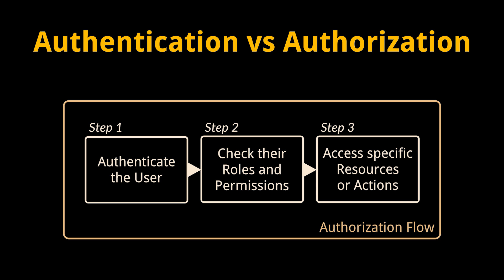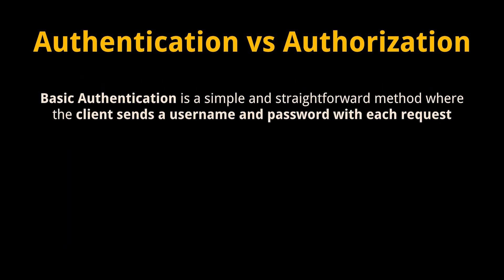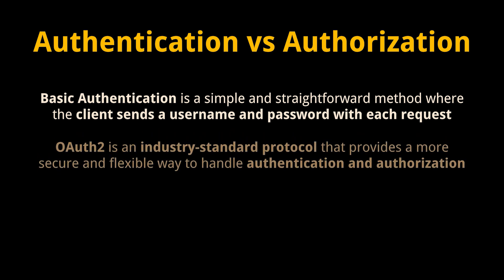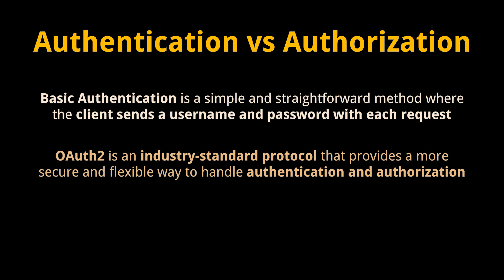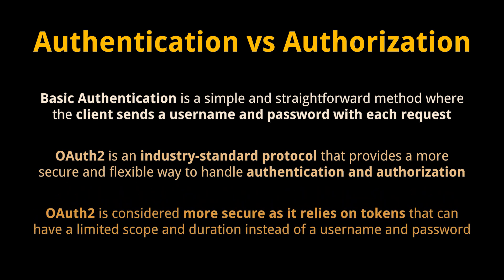Authorization involves defining rules that dictate what actions or specific resources can be accessed by the authenticated user. Basic authentication is a simple and straightforward method where the client sends a username and password with each request, similar to what we did in the previous video. OAuth2, however, is an industry standard protocol for authorization that provides a more secure and flexible way to handle authentication and authorization. It is considered more secure because it doesn't involve sending user credentials with each request — instead, it relies on tokens that can have a limited scope and duration.